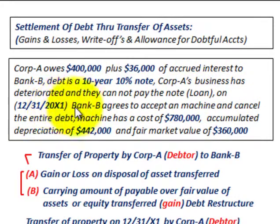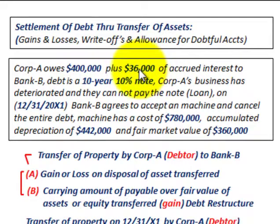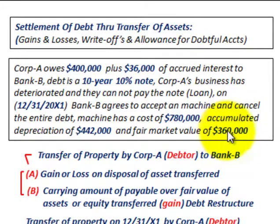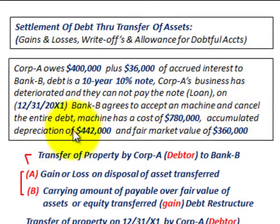On 12-31-20X1, Bank B agrees to accept a machine and cancel this entire debt — that's the $400,000 note receivable plus the $36,000 of interest payable on that note. What they're going to receive is a machine with a fair market value of $360,000 in exchange for this debt that they're going to write off. The cost of the machine is $780,000, sitting on Corporation A's books, and it also has accumulated depreciation of $442,000, also on Corporation A's books.